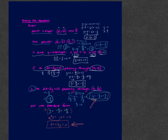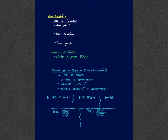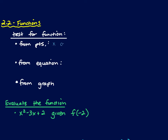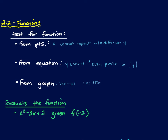That was all of 2.1. Then we got into 2.2, which is our introduction to functions. Figuring out if something is a function: if I'm looking at points, the x cannot repeat with a different y. From an equation, the y cannot be raised to an even power or be inside an absolute value — so no y squared, y to the 4th, or absolute value of y. From a graph, we use the vertical line test. If a vertical line passes through a graph at more than one point, it fails the vertical line test.